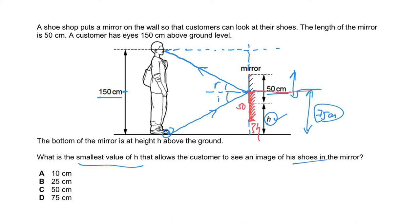So what you're left with is to find this minimum H. You take 75 minus the fixed length of the mirror, which is 50, and you have 25cm. So the minimum value of H is 25cm.